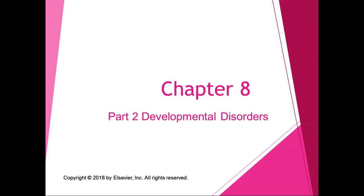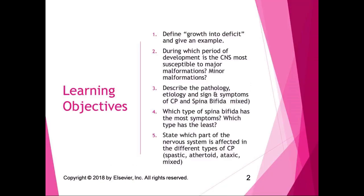The second part of chapter 8 is about developmental disorders. My brain likes to make structures, so I think of the classes in this program as: where things are, what goes wrong, and what we do about it. Kinesiology is where things are or how things work, pathology is what goes wrong, and modalities, orthopedics, and neuro rehab are what we do about it. This class is a combination of where things are and what goes wrong, and next quarter in neuro rehab you'll learn what we do about it.